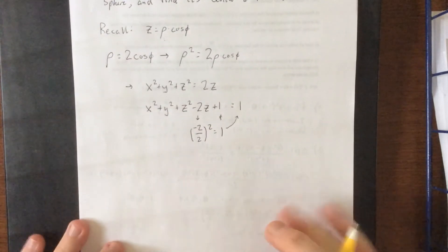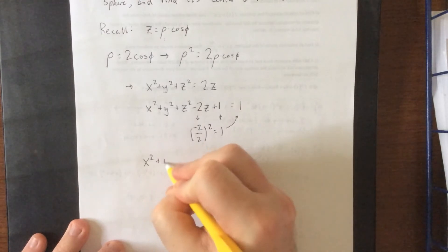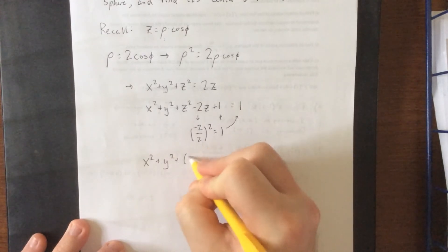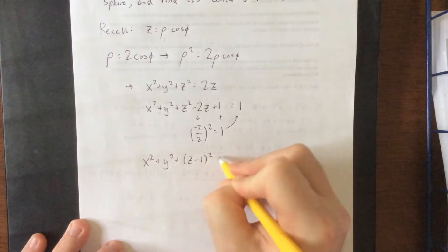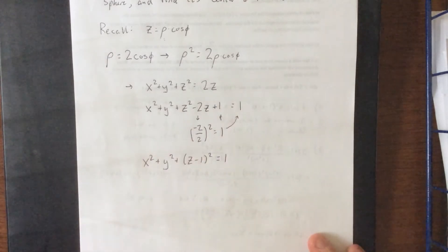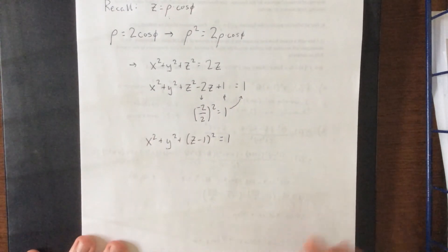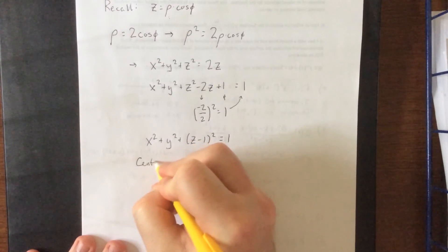So what we're looking at for standard form of our sphere is now x squared plus y squared plus z minus 1 quantity squared is equal to 1. So given that this is a standard form of the sphere, we can identify the center.